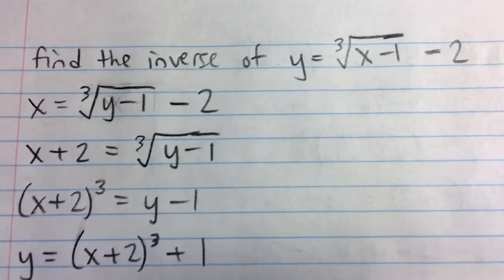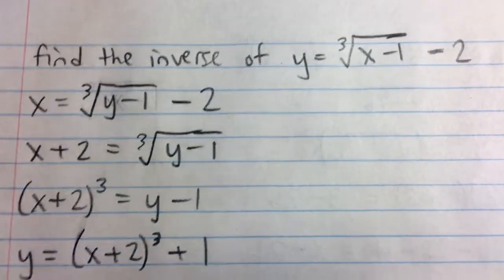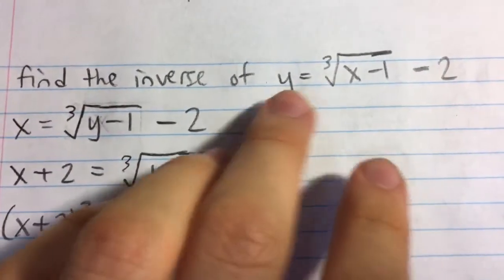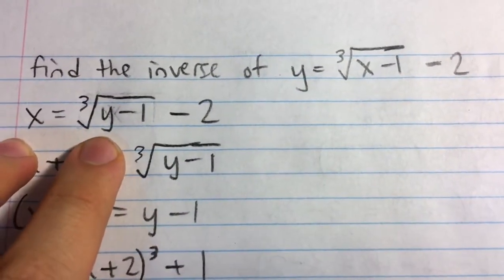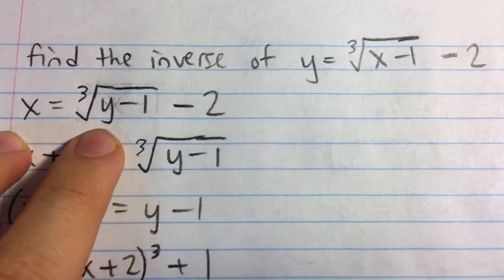So, every time we see x, we sub in for y, and every time we see y, we sub in for x. Notice that I've done that here, replaced y with x and x with y.